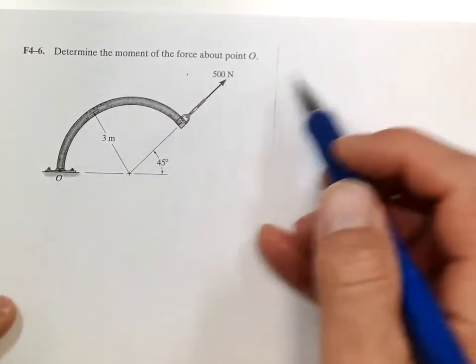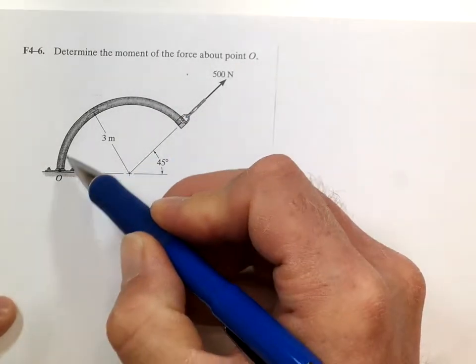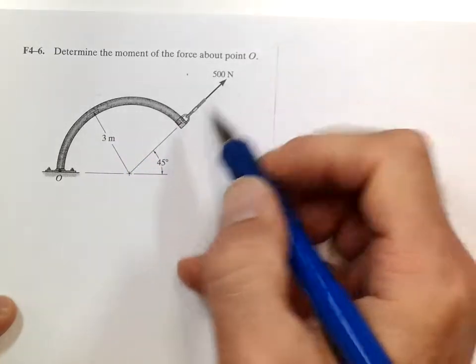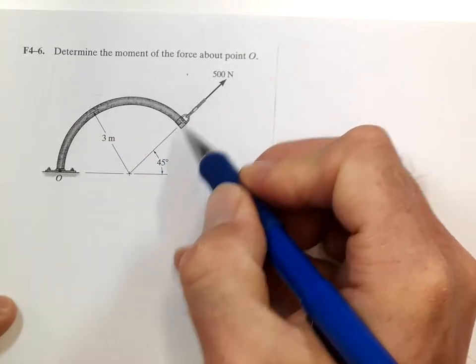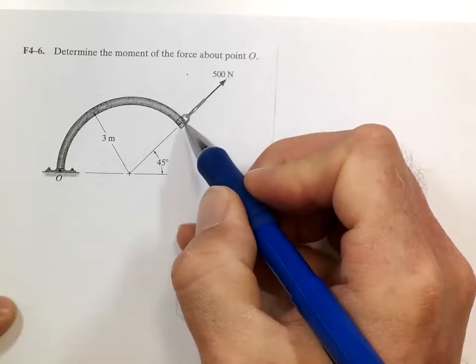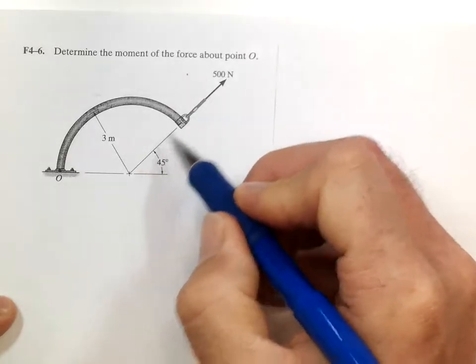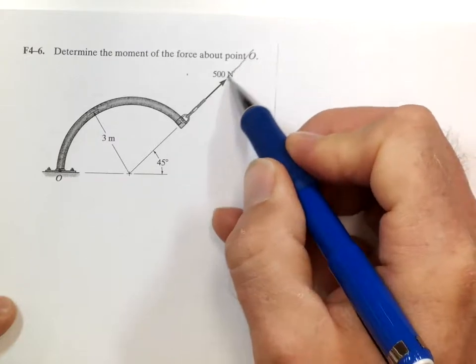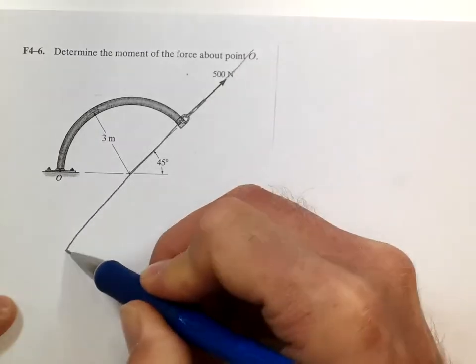Determine the moment of the force about point O. Now, it doesn't matter that the shape is curved. All that we care about is the distance from the point to the force, or in this case, the line of action, because this force is acting along this line.